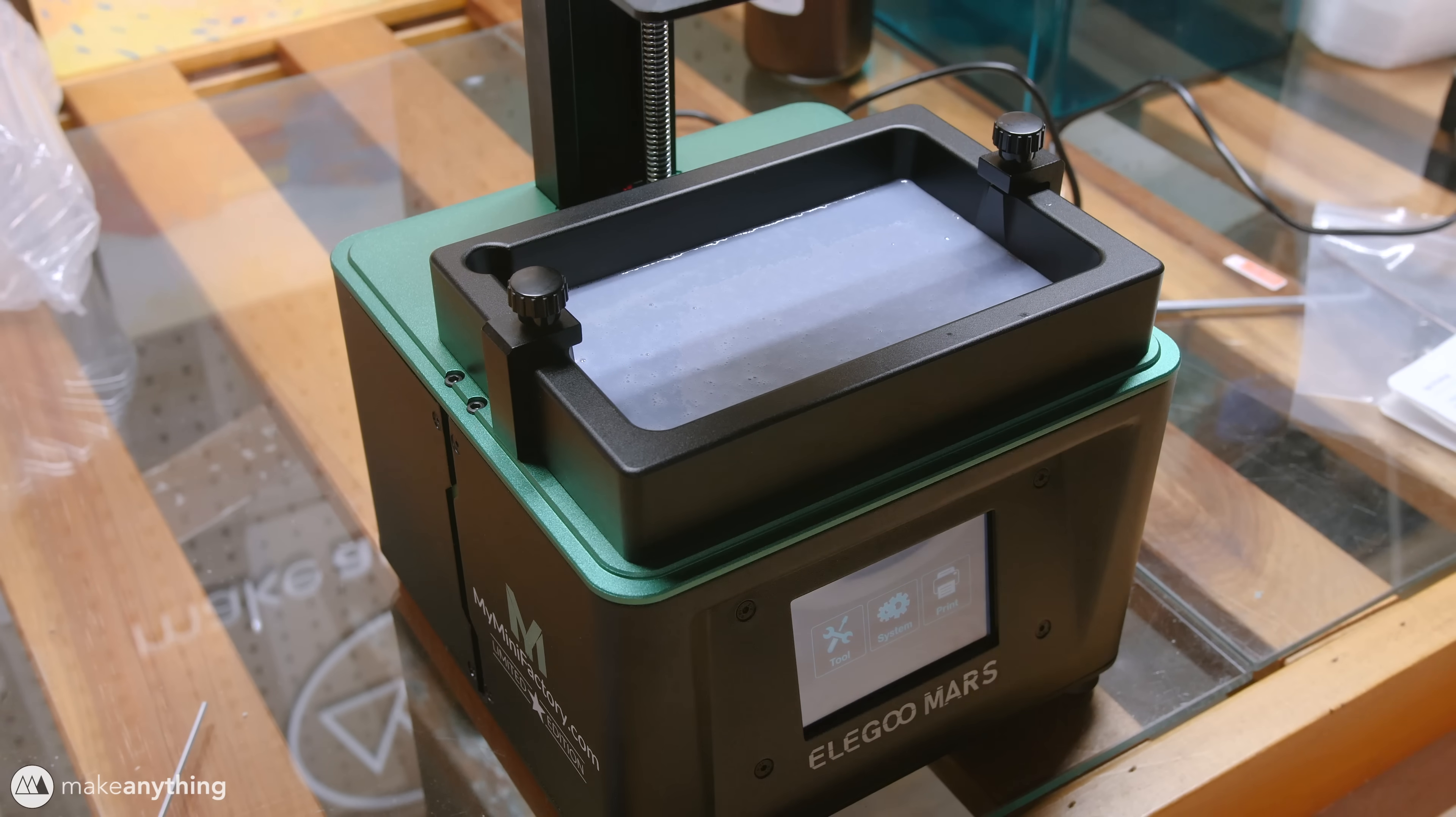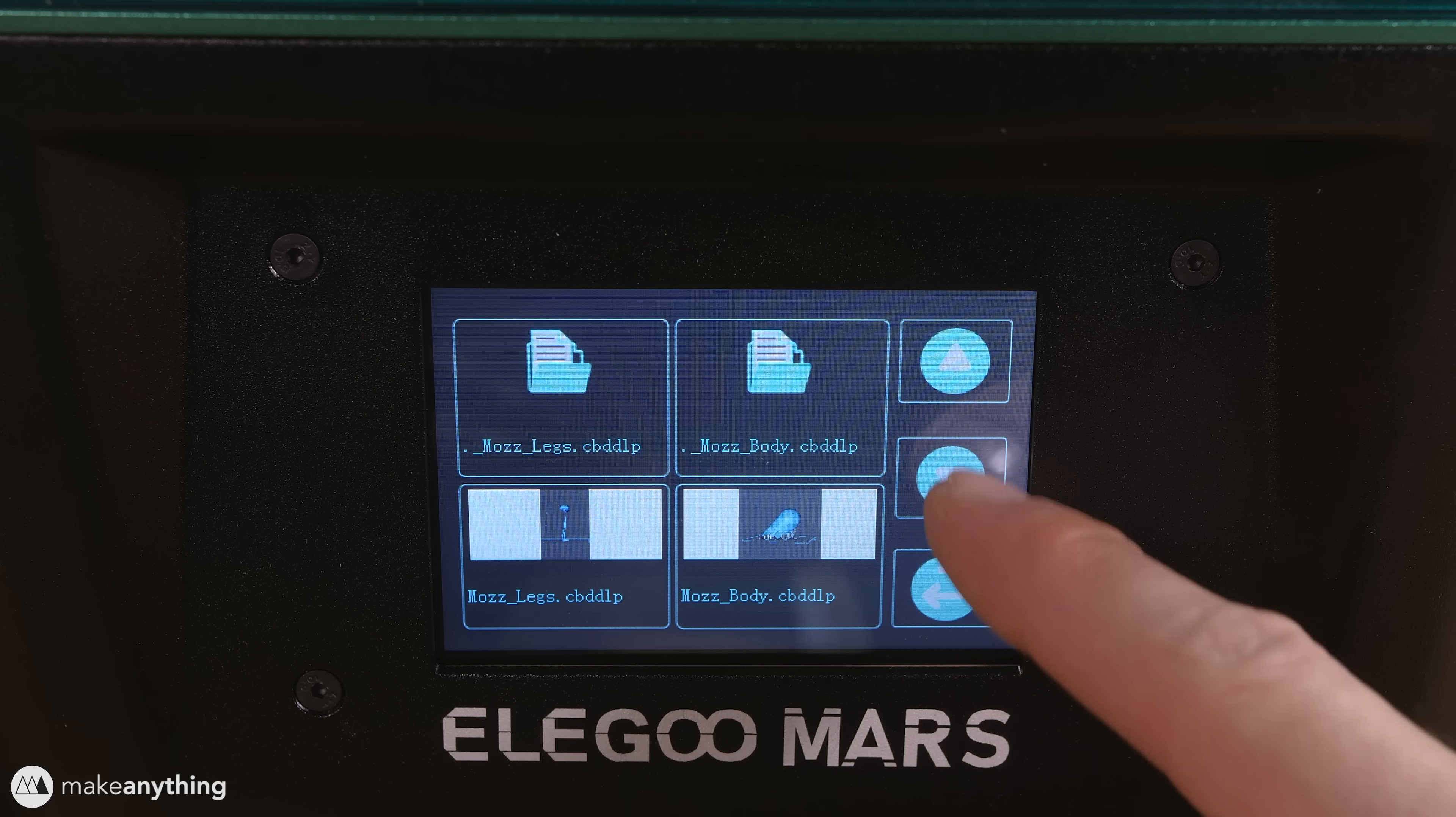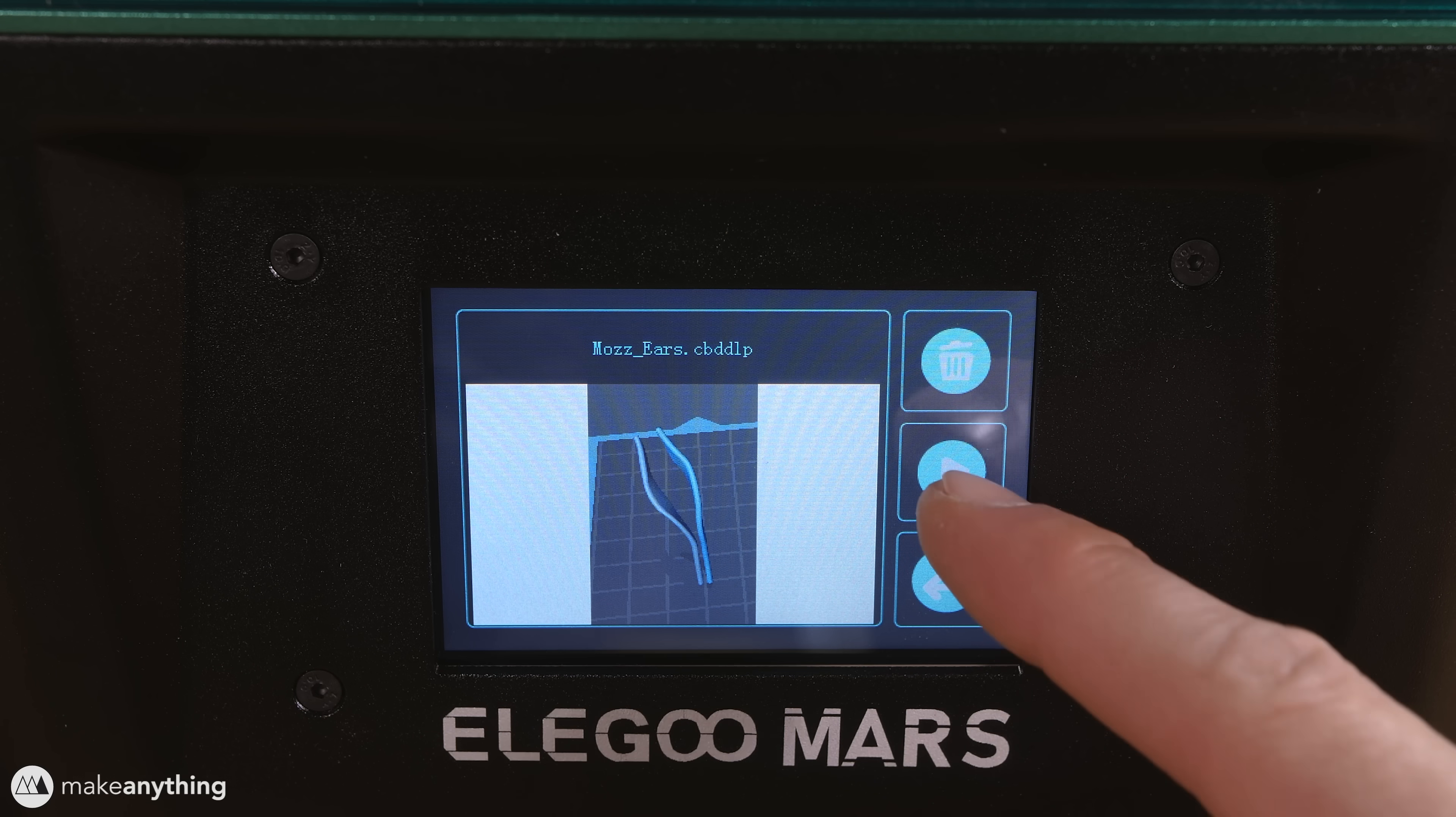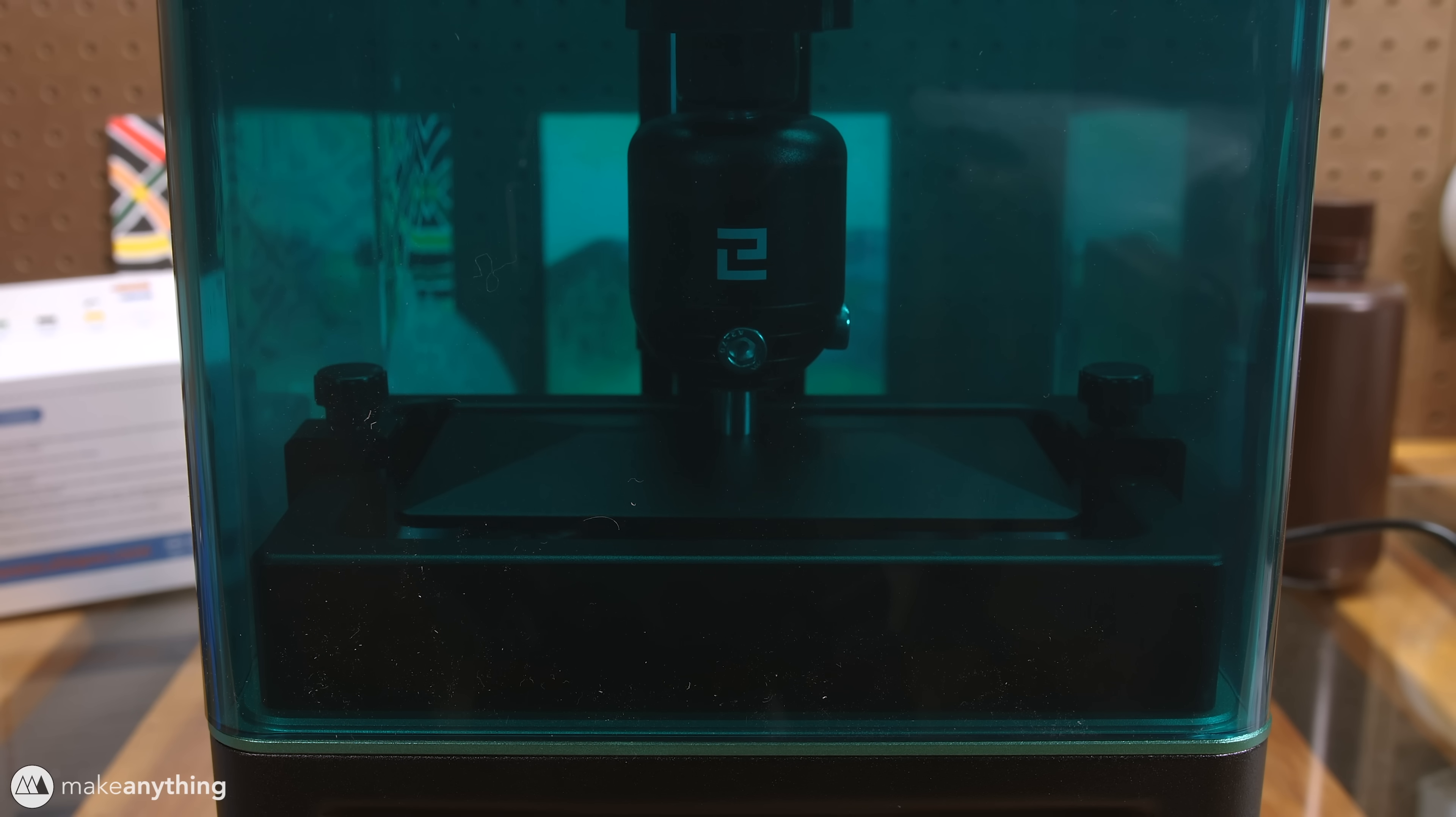Once that's settled we can put on our protective lid and select our first printing file. This little touchscreen is nice and responsive and it even gives us a nice 3D preview of our file. As soon as we hit that play button the build plate will lower down into the vat of resin and the print will begin.